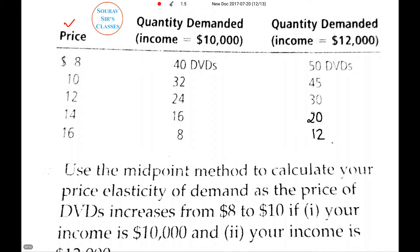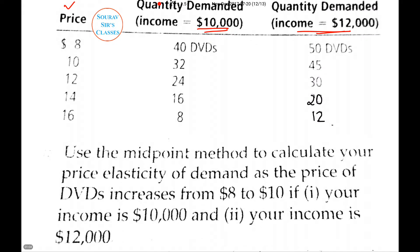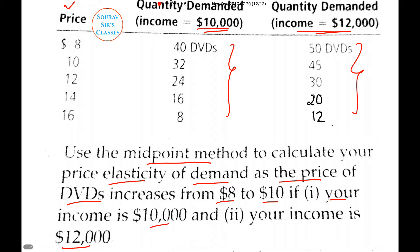I have a price bracket column, then the quantity demanded when income is $10,000 and quantity demanded when income is $12,000. We need to use the midpoint method to calculate the price elasticity of demand as the price of DVDs rises from $8 to $10. For $10,000 income we use the first bracket, and for $12,000 income we move to the next bracket. Since the price range is $8 to $10, we only work with the first two columns.